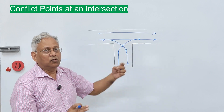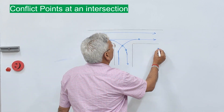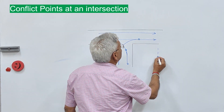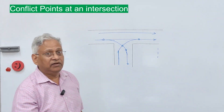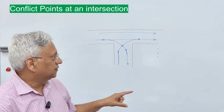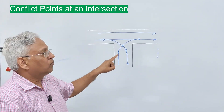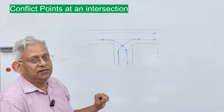So the total points reduce to one crossing, one merging, and one diverging — rather than three, three, three — when you have one street made one-way at a three-leg intersection.